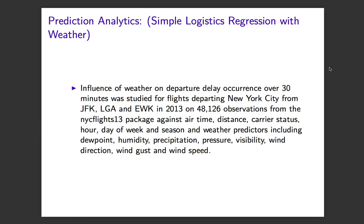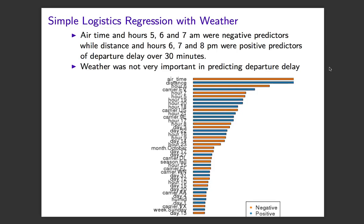A second simple logistic regression model was built to study the effect of the same predictors, as well as weather, on departure delay for all flights departing New York City in 2013 from the NYC Flights 13 package. Weather predictors assessed included dew point, humidity, precipitation, pressure, and others. As the variable importance plot shows, airtime and early morning hours were negative predictors, while distance and evening hours were positive predictors of departure delay over 30 minutes. Weather was not very important in predicting delay.